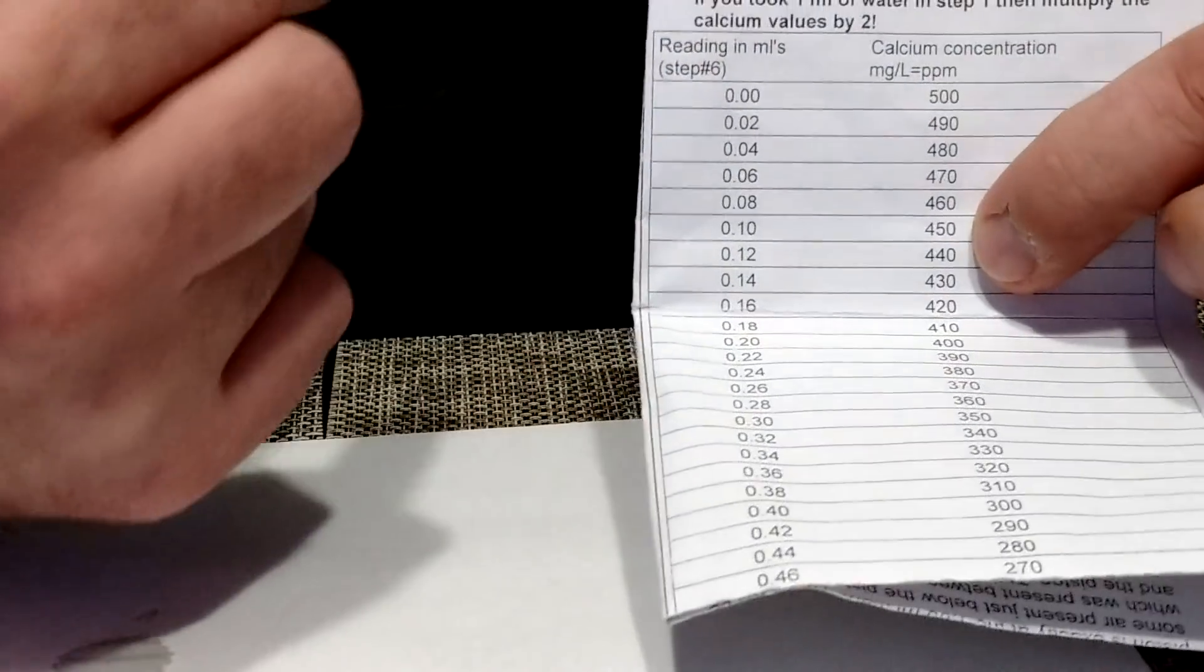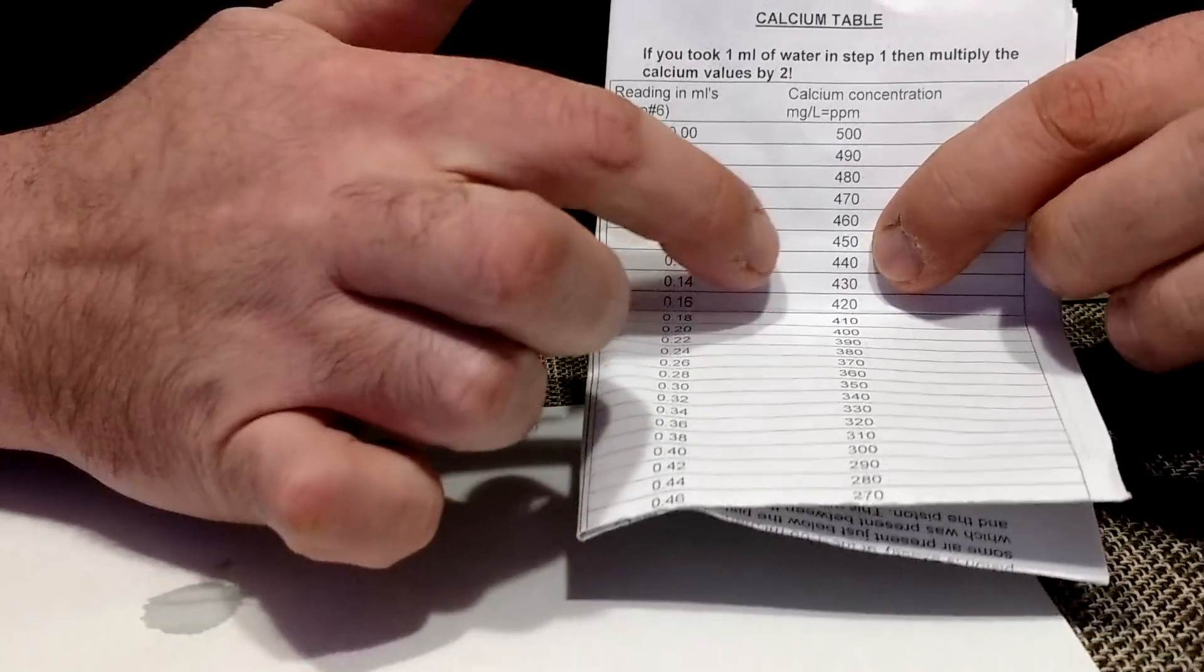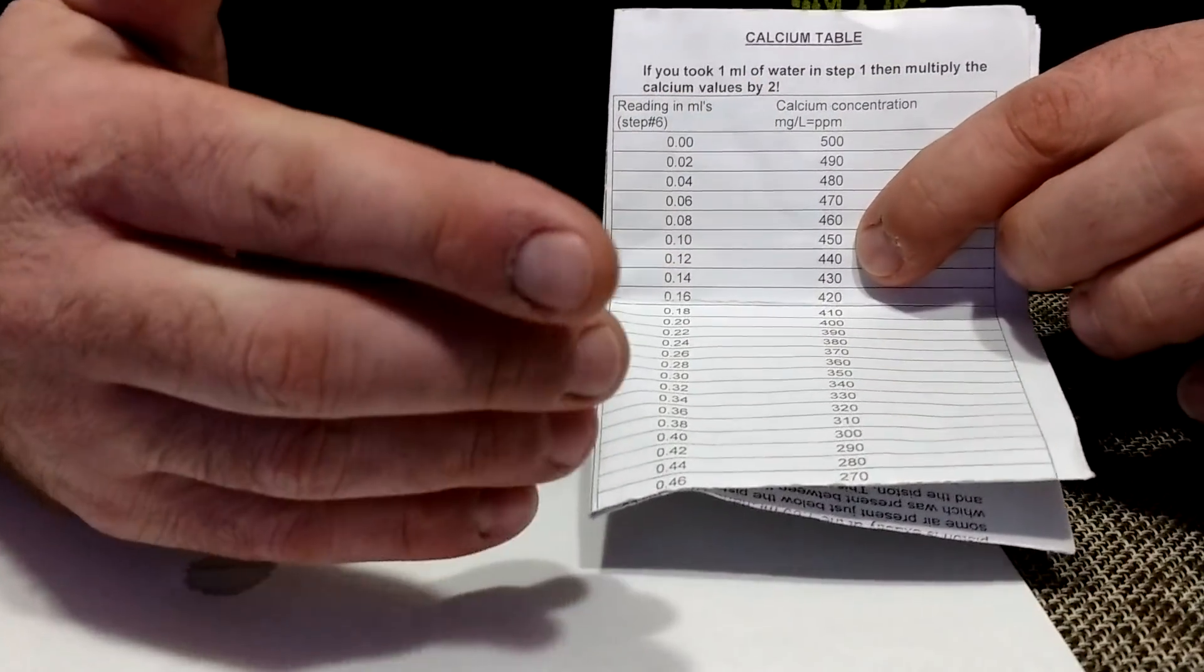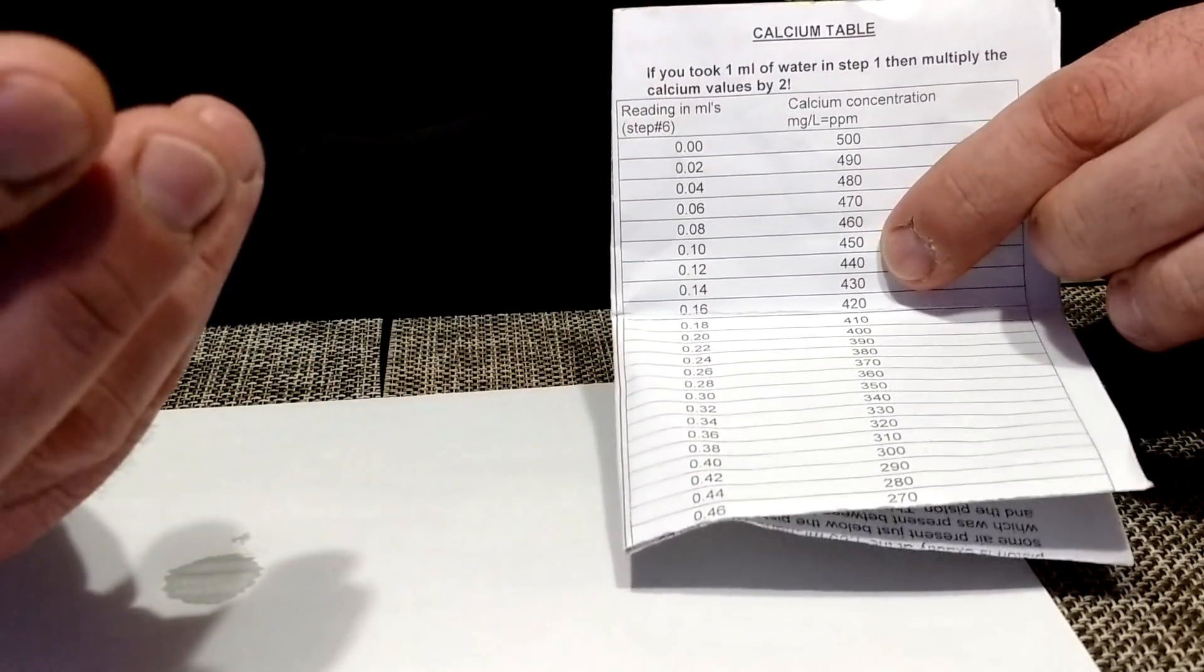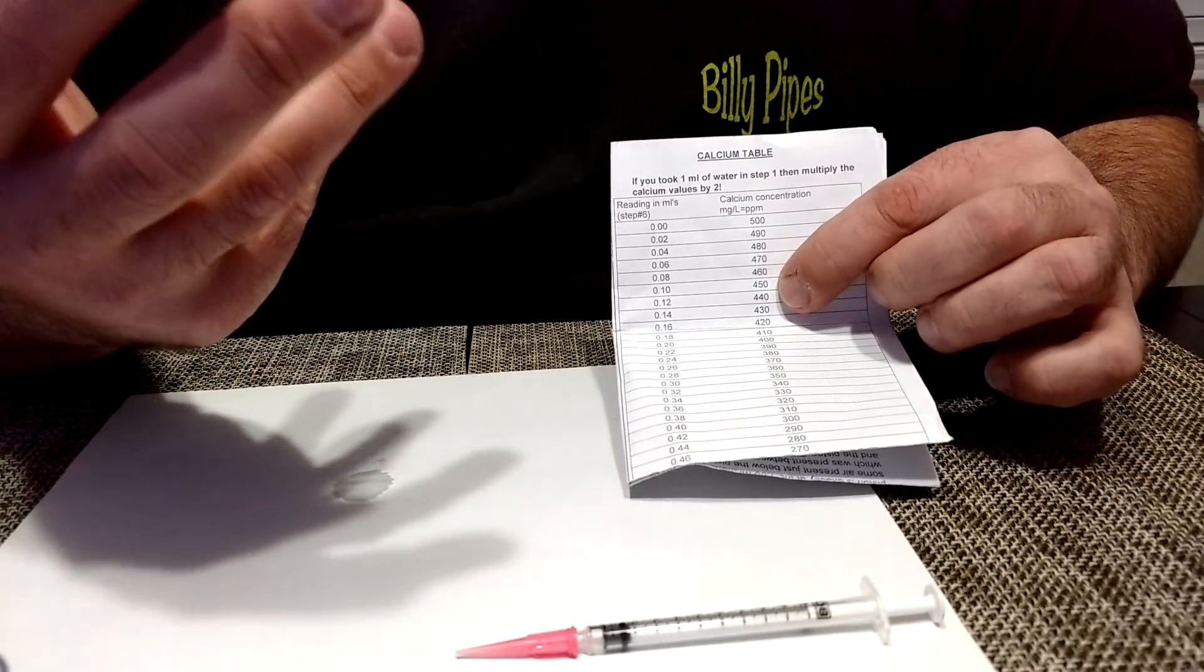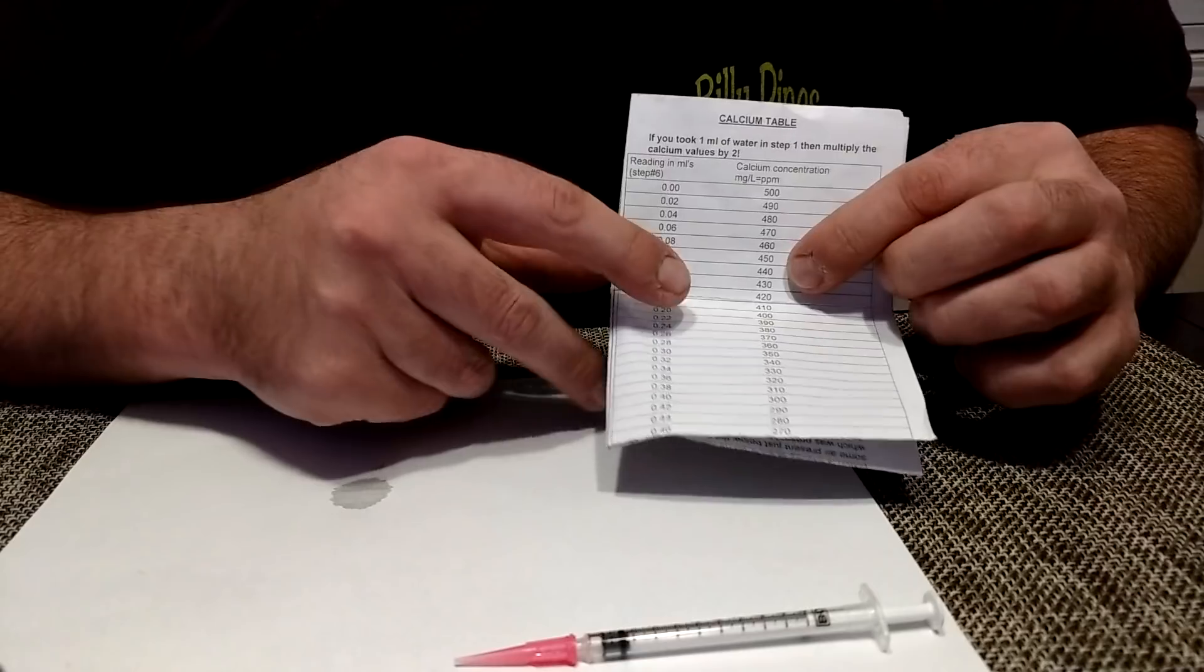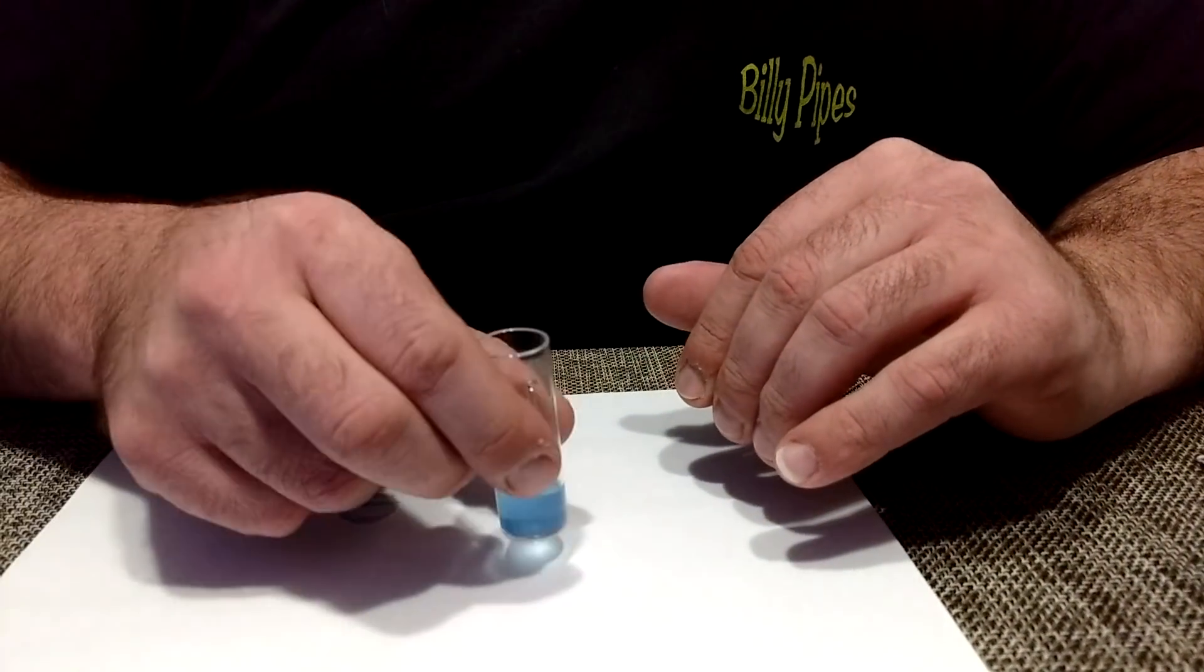Perfect. My tank likes anywhere between 425 to 500. I like it a little on the high side. My encrusting corals and my LPS have been growing very fast and I've been keeping them between 425 to 500.